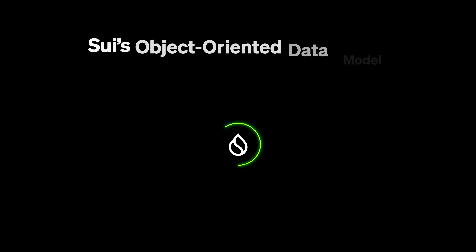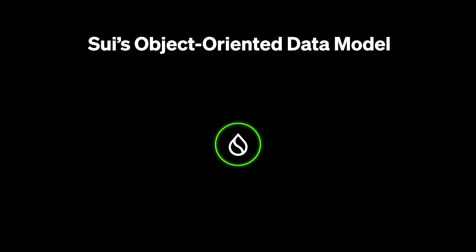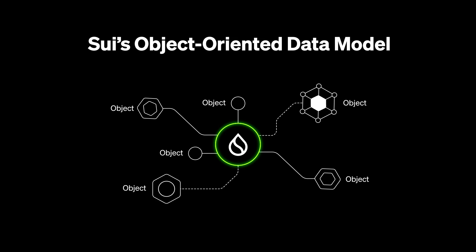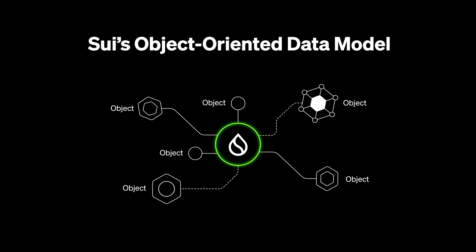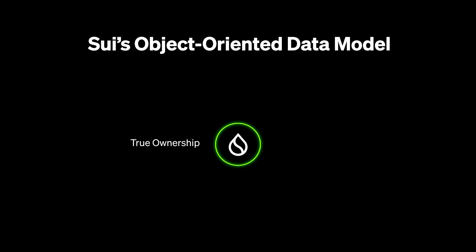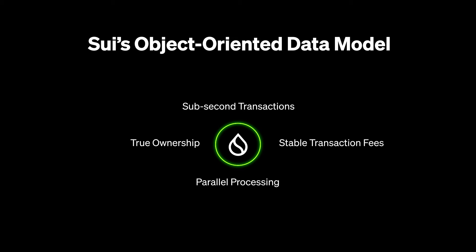Most smart contract platforms use an account-based data model, whereas SUI uses an object-centric data model. With SUI's data model, everything on-chain is represented as an object. Ownership is defined on the object, granting users true ownership of their assets rather than relying on ownership to be dictated by data in smart contracts, as is common in account-based data models. Aside from benefits around asset ownership, SUI's data model allows for stable transaction fees, sub-second transactions, and parallel processing of transactions.